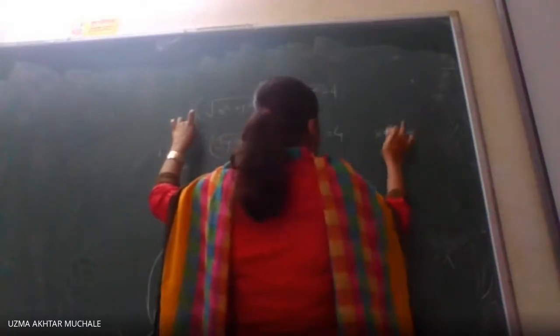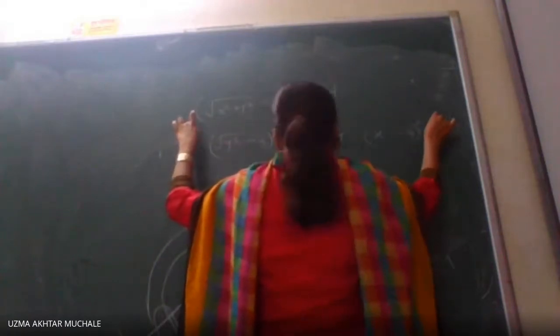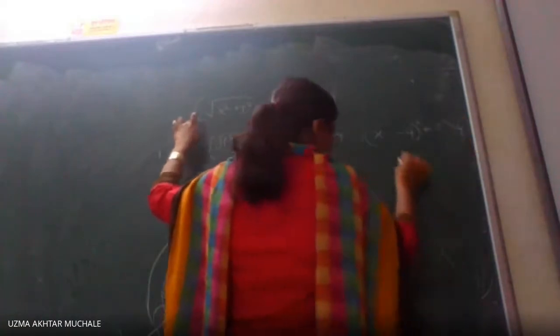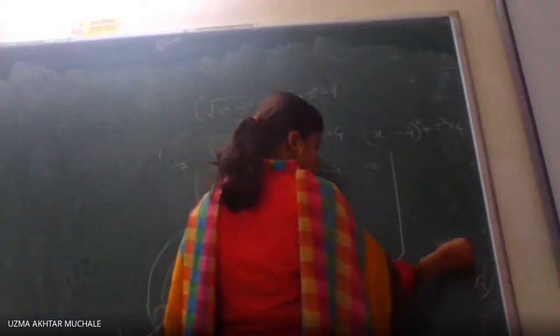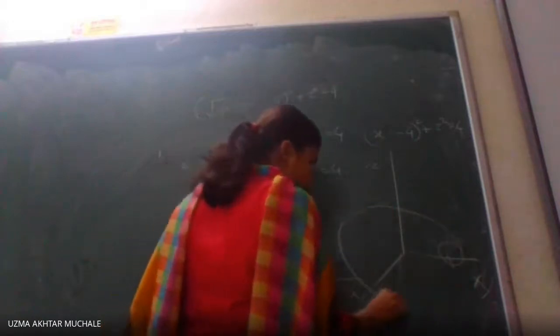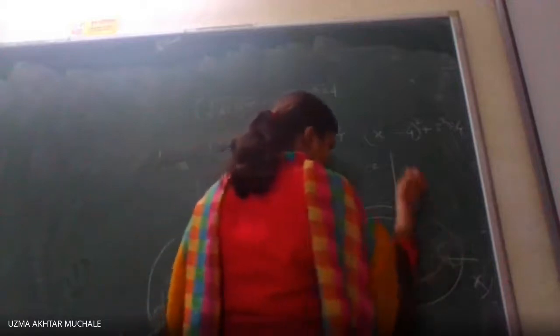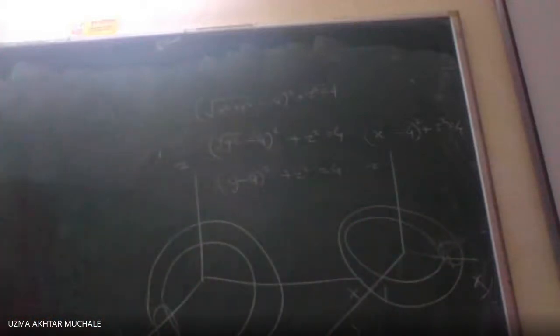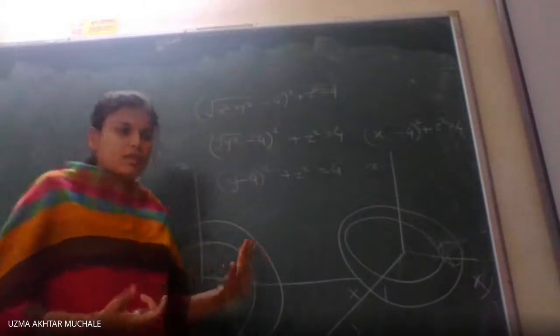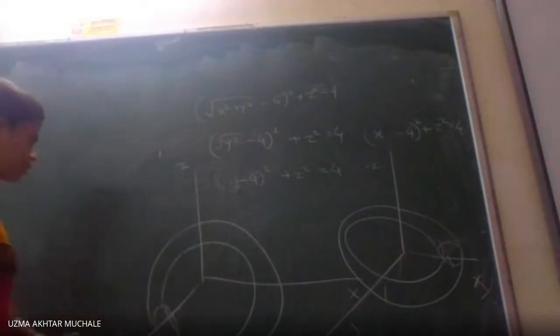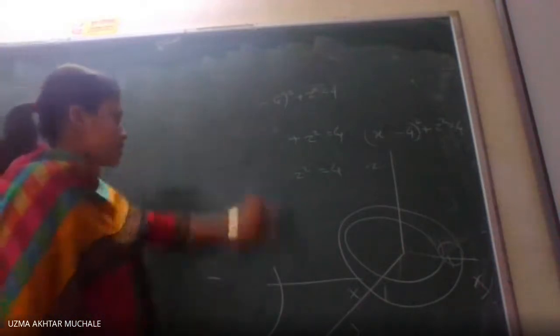If you put y = 0, you get (x - 4)² + z² = 4, which is a circle in the x,z plane. This circle we revolve about the z-axis, and whatever object we get is a torus of revolution — just like a tube or donut shape. So this is the geometric way to find out whether the given object is a torus of revolution.